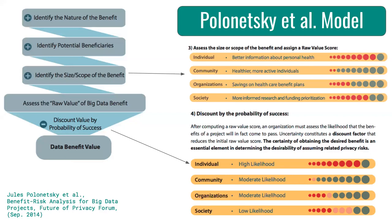Polonetsky et al.'s risk-benefit analysis for big data projects is one model for operationalizing such a risk-benefit analysis. The Polonetsky model identifies the panoply of benefits of the proposed data project, along with all potential beneficiaries. They suggest determining the size and scope of potential benefit to each of the beneficiaries to determine the raw value benefit of the project. That's what you see at the top right, with higher value for a stakeholder measured in increasing numbers of red bubbles. That raw value benefit then gets discounted by the probability of success for each of those beneficiaries — the bubbles you see on the lower right — yielding a discounted data benefit value.